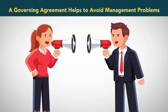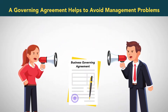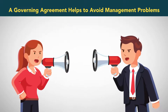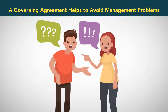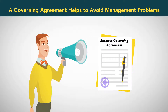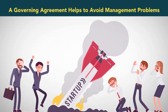A second reason is that a governing agreement helps to avoid management problems. Even if one is not required to have a governing agreement, such an agreement can serve as a valuable insurance policy against internal conflict and gridlock. Rare is the business that never experiences disagreements among its owners. Not having any governing agreement to anticipate and defuse internal conflicts is an unforced error that can lead to bad outcomes, up to and including the demise of the business itself.